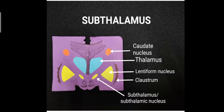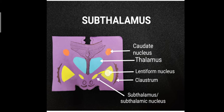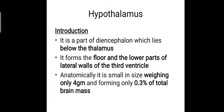Here we have a representation where you can see the biconvex structure — that is the subthalamus or subthalamic nucleus — which lies laterally to the thalamus and inferomedial to the lentiform nucleus. The lentiform nucleus has two parts: the outer putamen and the inner globus pallidus. The internal capsule is here, and there exists a connection between the lentiform nucleus — specifically the globus pallidus — and the subthalamus, traversing the internal capsule.